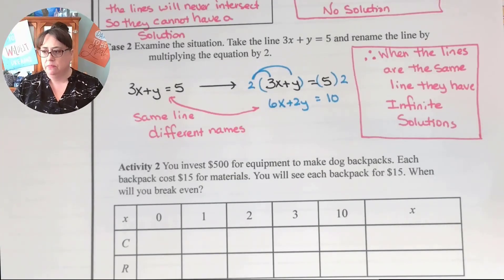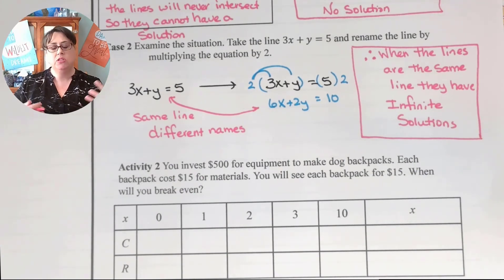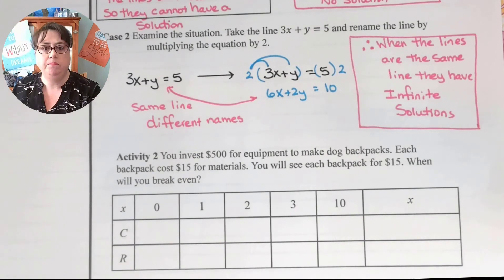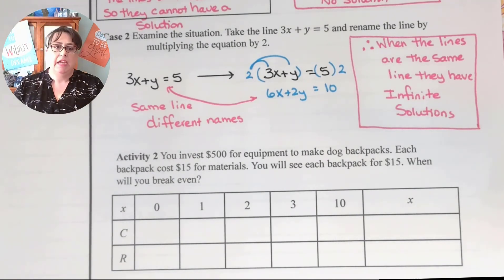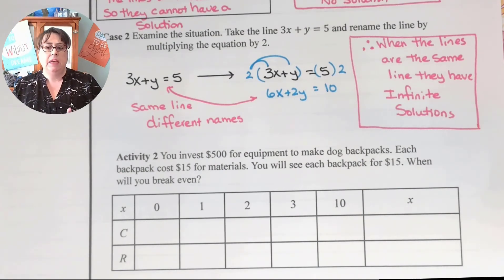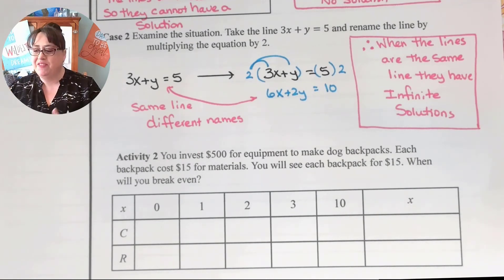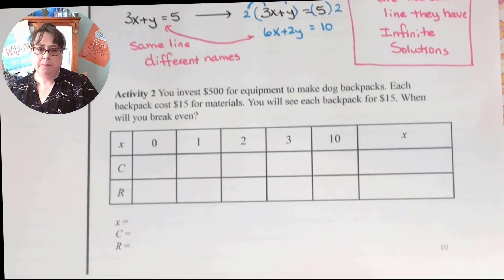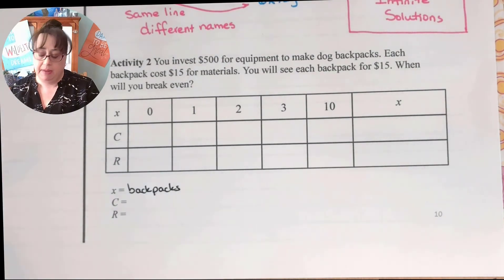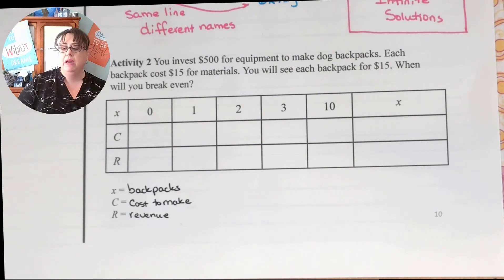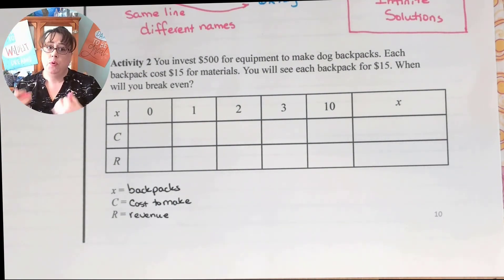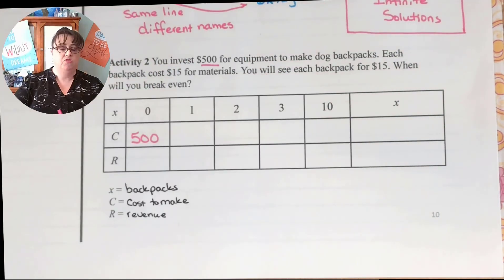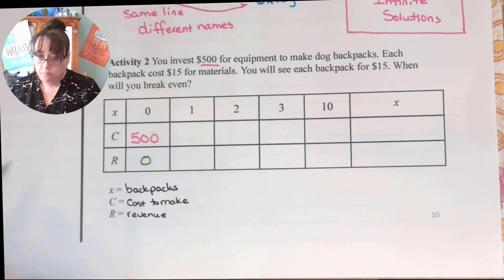So how do you figure out which case you have? It gets down to what your answer looks like — we'll talk about that in a second. But first, let's look at this activity. You invest $500 for equipment to make dog backpacks. Each backpack costs you $15 for materials and you will sell each backpack for $15. When will you break even? X is your number of backpacks, C is your cost to make, and R is your revenue. Before you make any backpack at all, you have to spend $500 just to get ready, and you have not made a single dime.